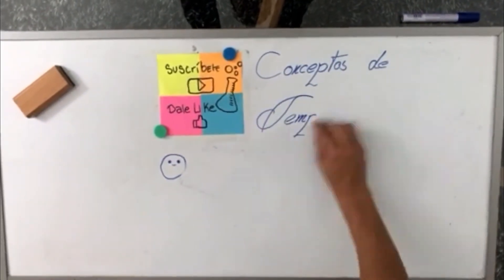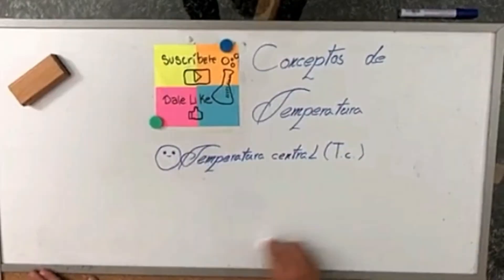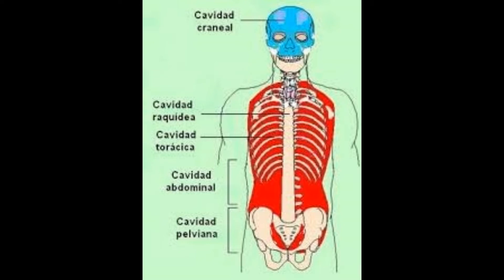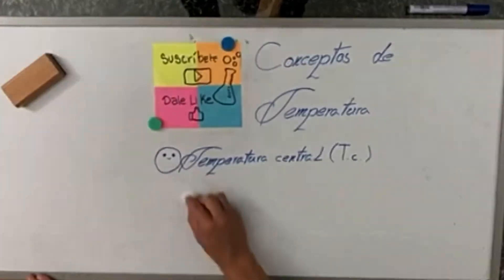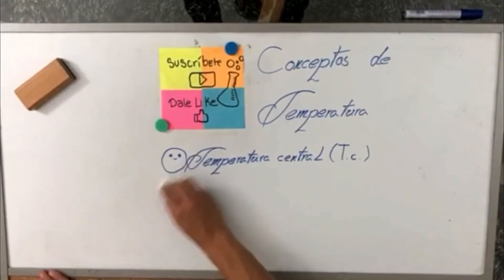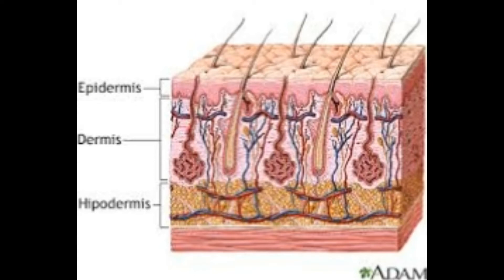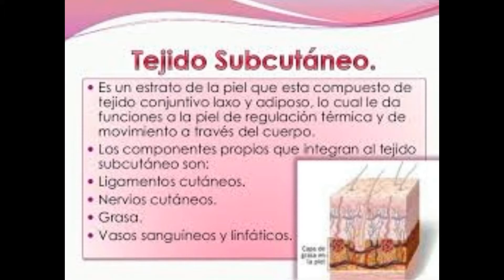Conceptos de temperatura: central, superficial y corporal. Temperatura central: está constituida por los contenidos de la cabeza, cavidades torácicas y abdominales. La temperatura central permanece relativamente constante, manteniéndose dentro de límites bastante estrechos. Temperatura superficial (T.S.): está constituida por la piel, el tejido subcutáneo y el grueso de la masa muscular. El promedio de la temperatura de la piel superficial aumenta con el incremento de la temperatura ambiental.